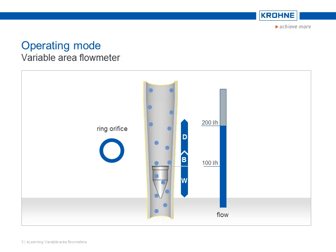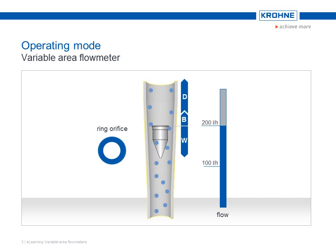With the higher position of the float, the ring orifice also becomes wider. So the flow velocity in the orifice sinks again, and the flow force returns to a state of equilibrium.